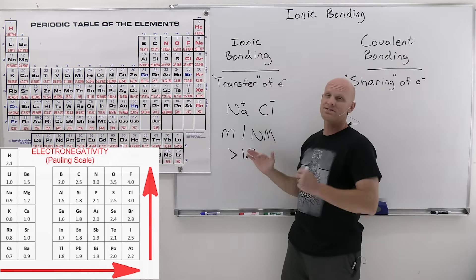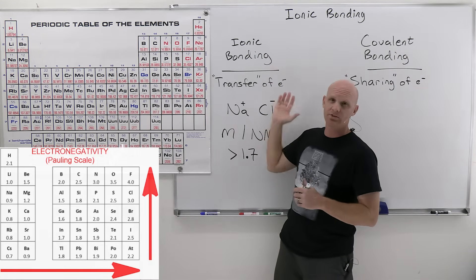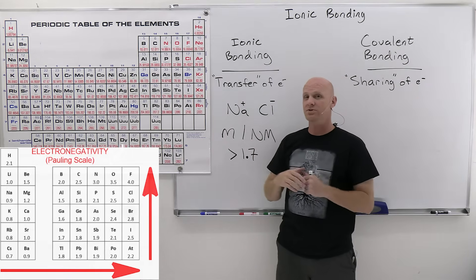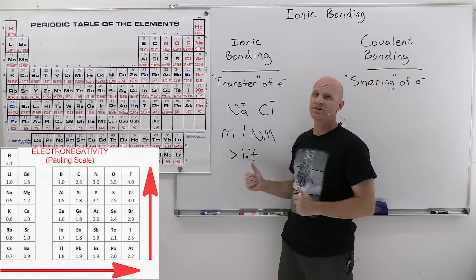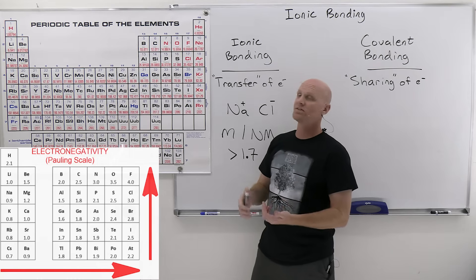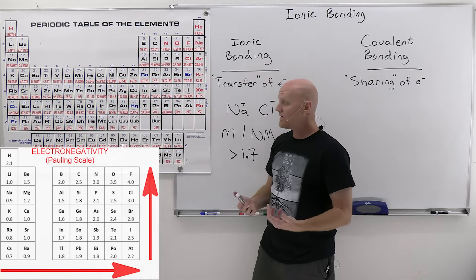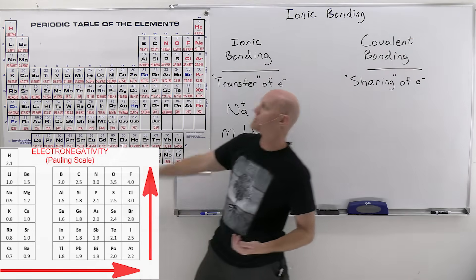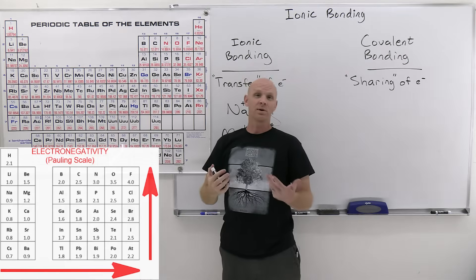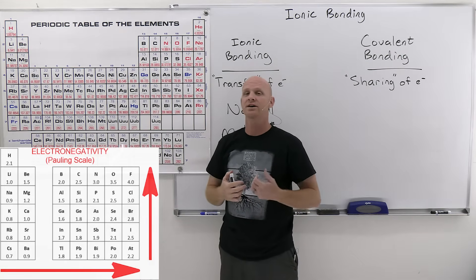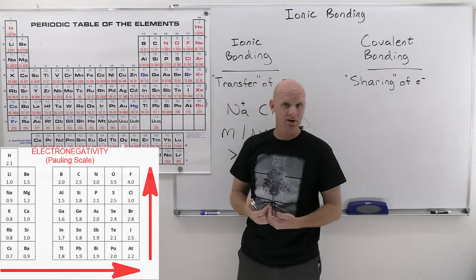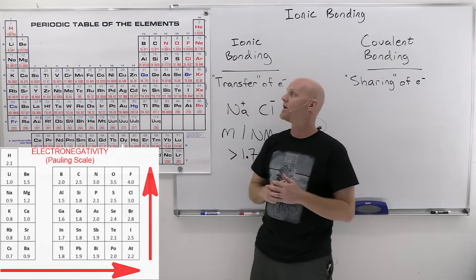Anything over 1.7 we consider a complete transfer of electrons, but there really is a continuous spectrum with a degree of transfer. The bigger the difference in electronegativity, the greater the ionic character. Comparing NaCl to NaF: the difference for NaF is 0.9 versus 4.0, giving 3.1, so sodium fluoride has a greater ionic character than sodium chloride.